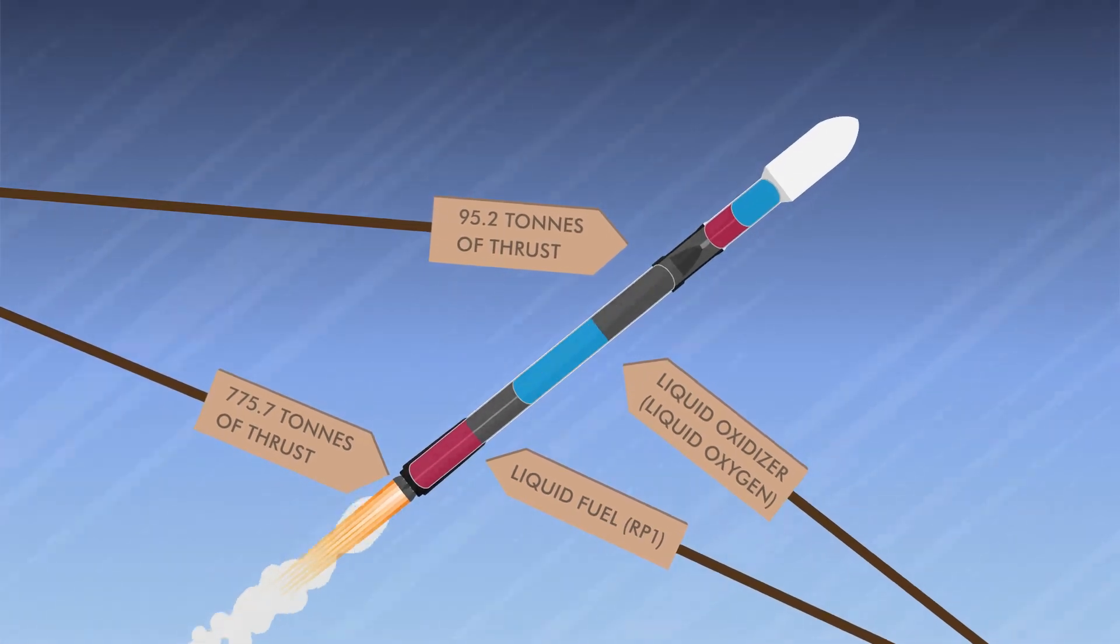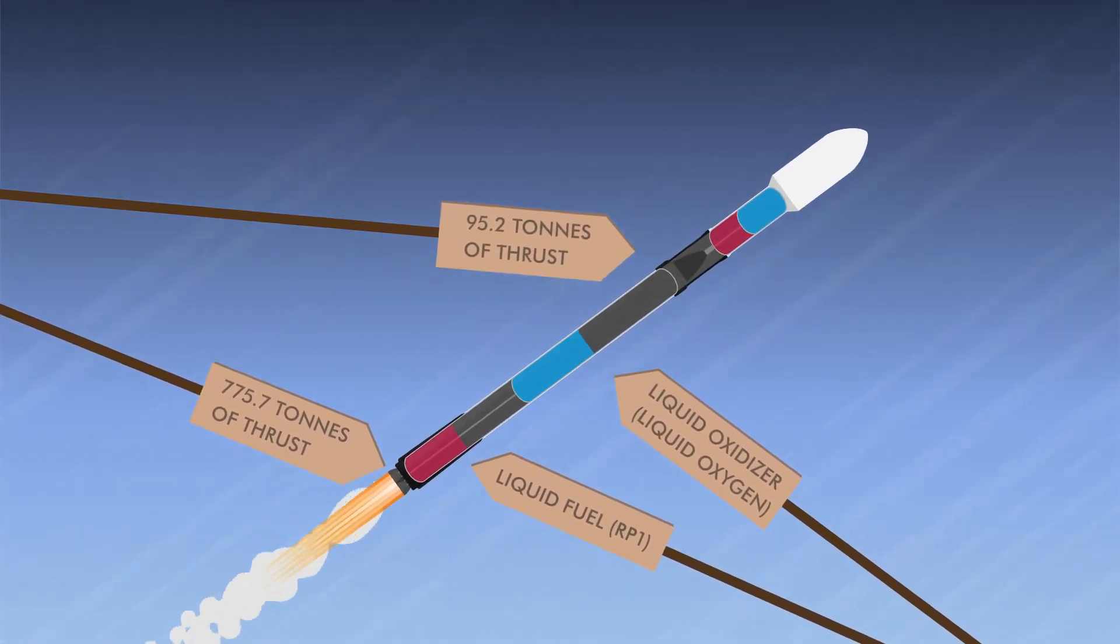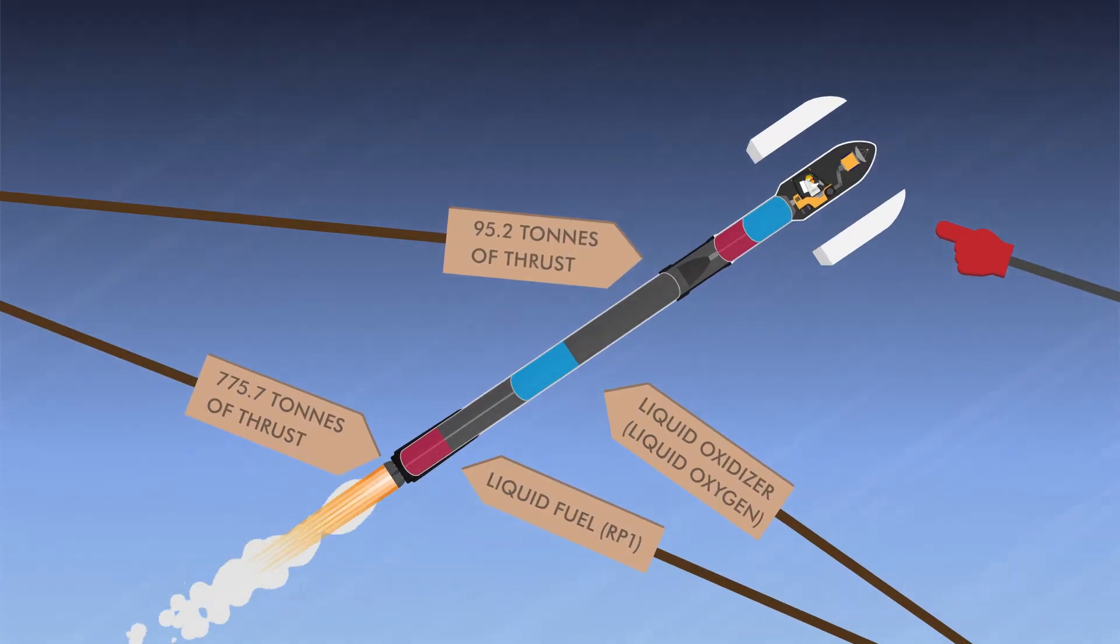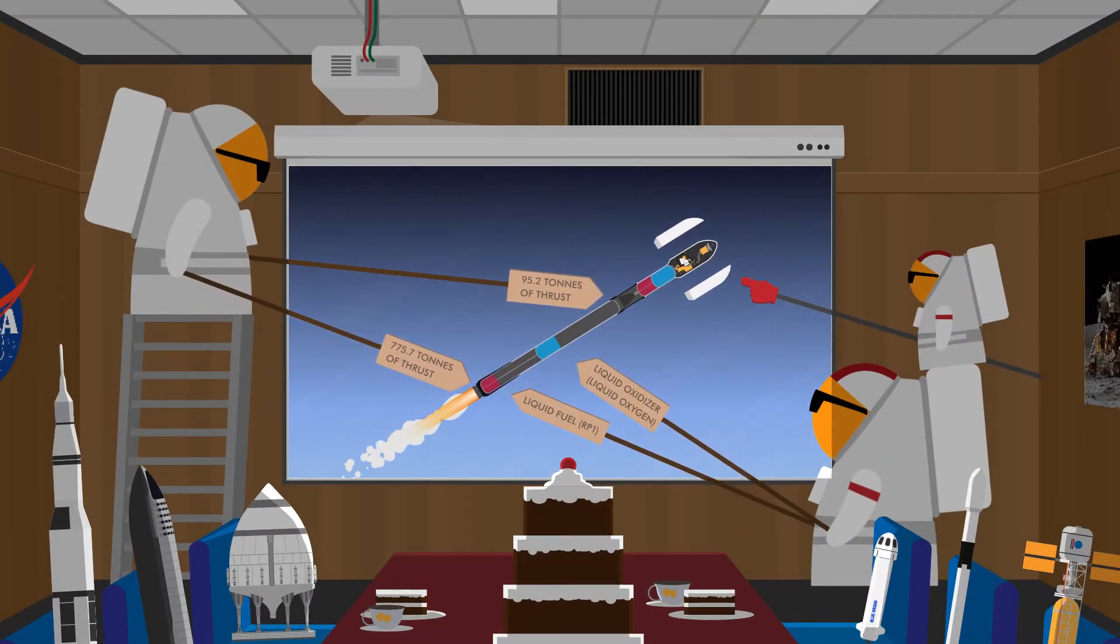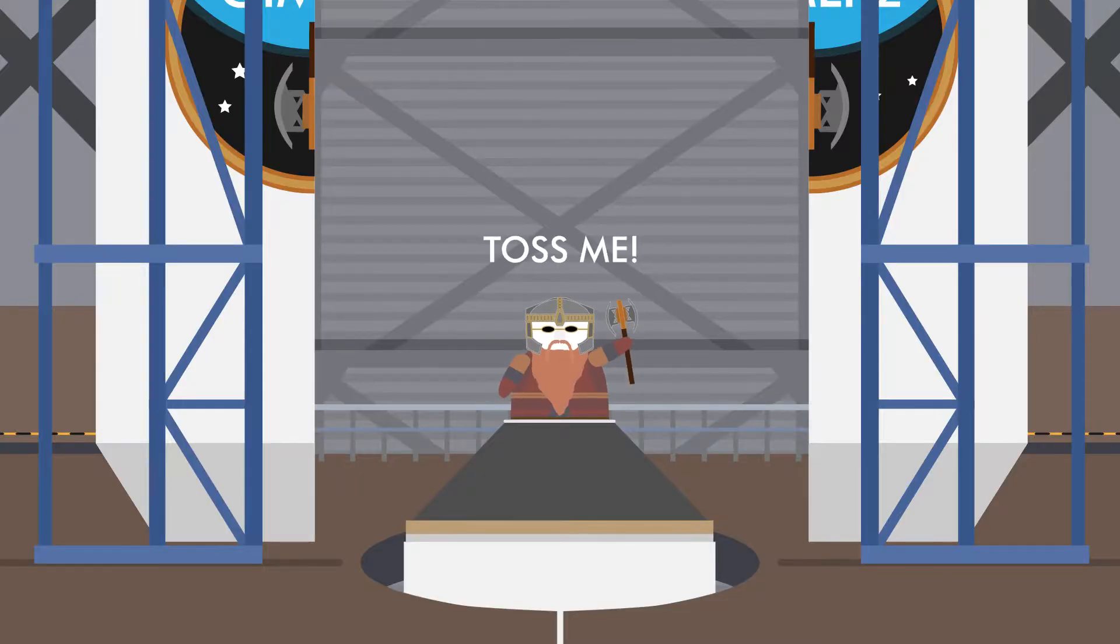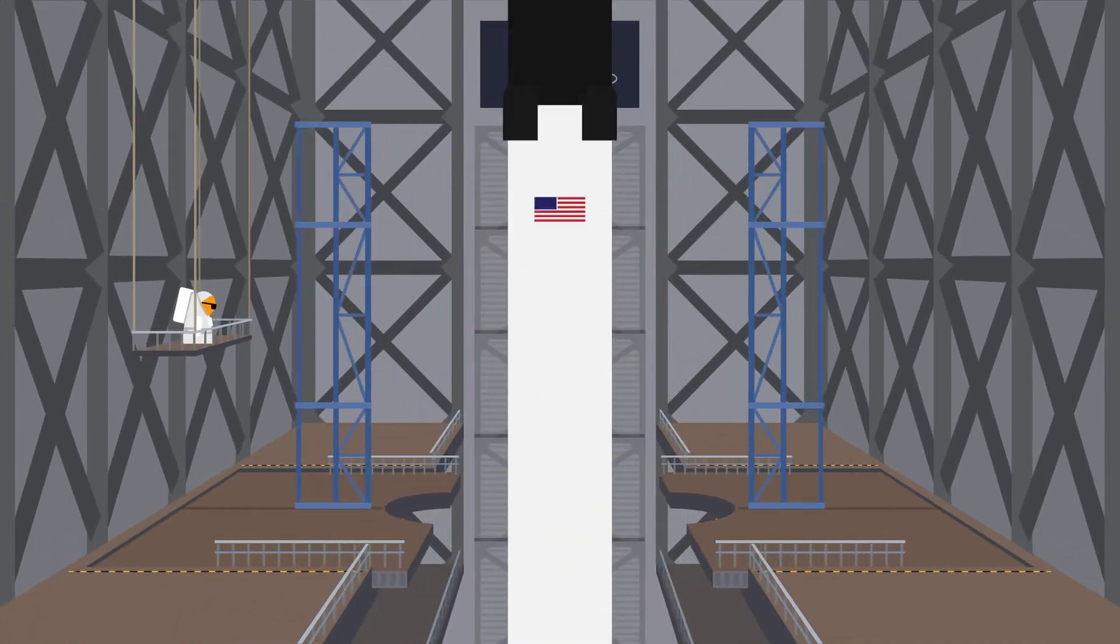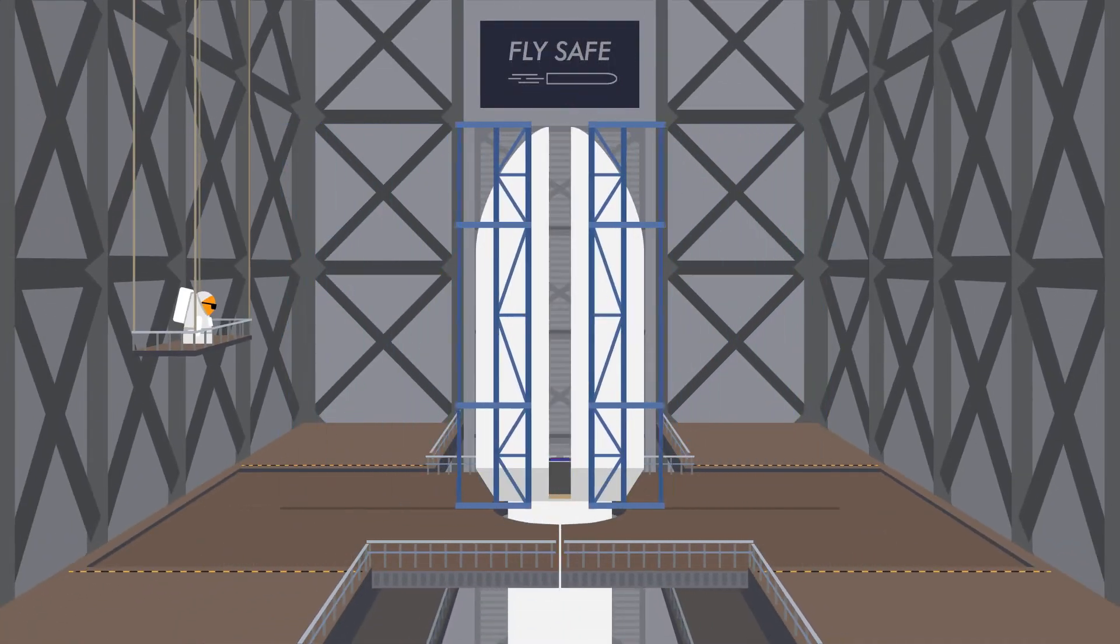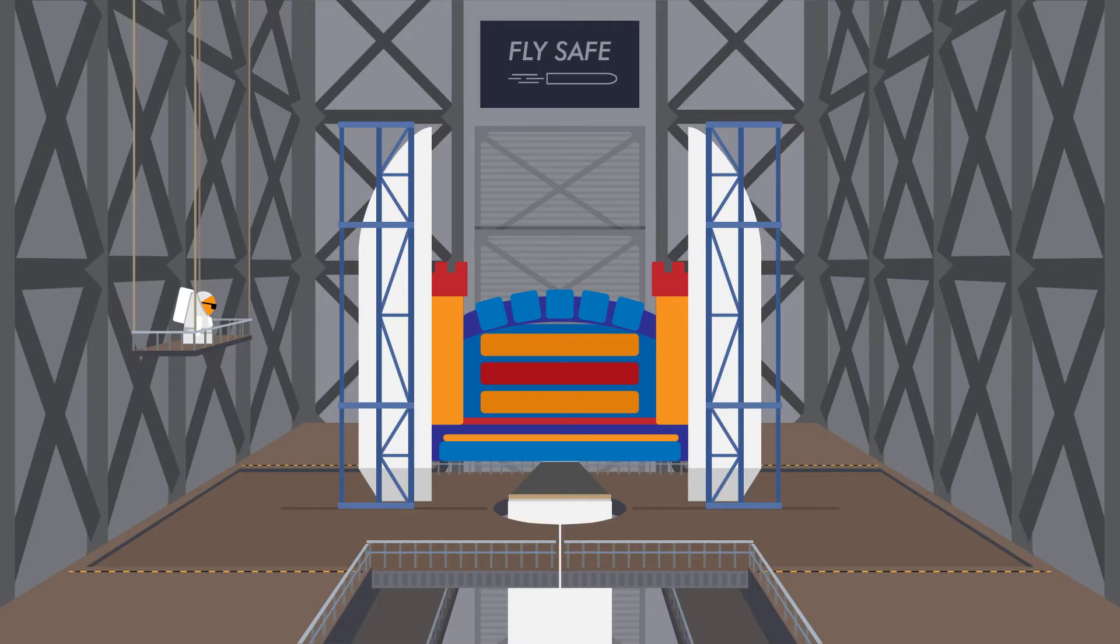And the volume a rocket can carry is limited by the size of the rocket's fairing. That's this thing. Those limits restrict what we can shoot up into space. Shooting up a small obese dwarf? Easy peasy.